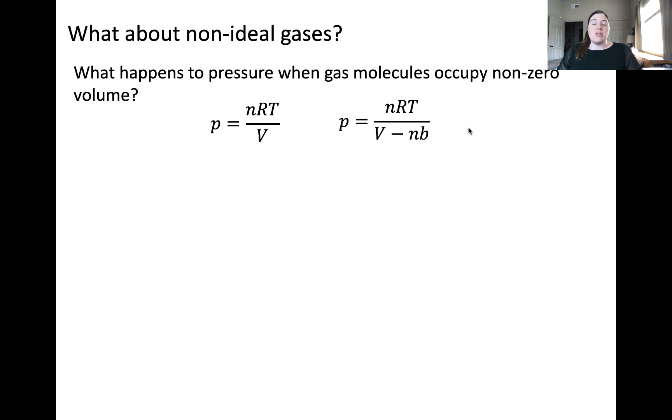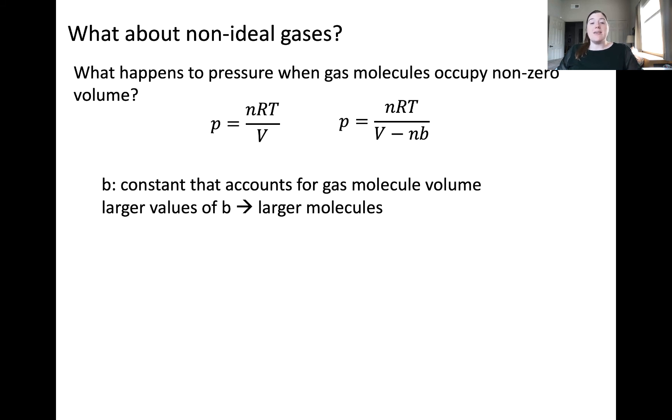This can be shown in the right hand expression, which takes into account the number of particles in the sample and a constant b. Importantly, the constant b physically accounts for the actual volume occupied by gas molecules. The larger the value of b, the larger the molecules.